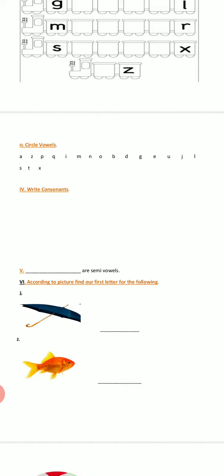Fifth task: semi ovals. How many semi ovals are there? There are two semi ovals. You have to write them in the blank provided.